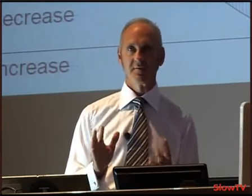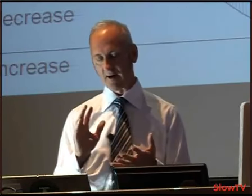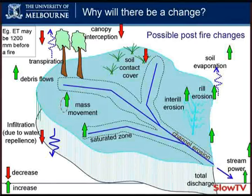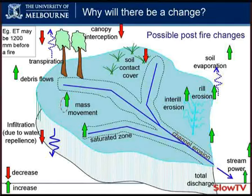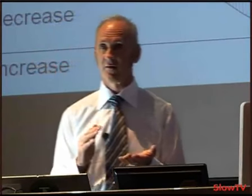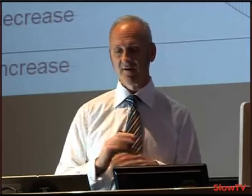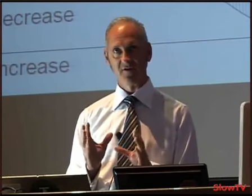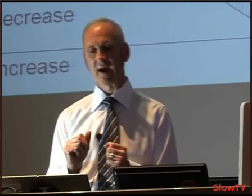For example, looking at the canopy interception and the transpiration: obviously, if all the leaves have gone off a tree, it's not going to be able to transpire anymore. It can't intercept water, and that can be up to 25% of a rainfall event — the rain never hits the ground, it gets intercepted by the canopy. If that's gone, then there's a whole lot more water in the system until there's a recovery of that canopy.